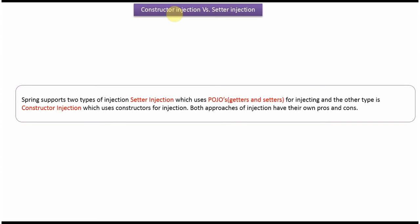In this video tutorial I will cover the difference between constructor injection and setter injection. Spring supports two types of injection: setter injection which uses POJOs getters and setters for injecting values, and constructor injection which uses constructors for injection. Both approaches of injection have their own pros and cons that we will see now.